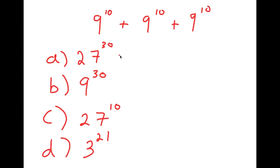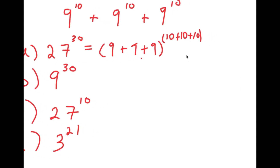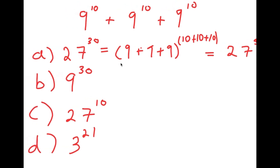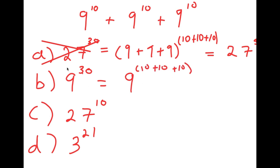Let's go through the option choices. Option A, 27 to the power of 30, was likely gotten by adding all the bases and adding all the exponents: 9+9+9 = 27 and 10+10+10 = 30. This is wrong because that is not the proper way to add exponents. Option B, 9 to the power of 30, was likely gotten by keeping the base the same and adding the exponents — also wrong.